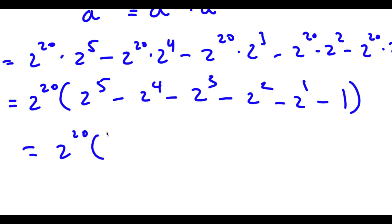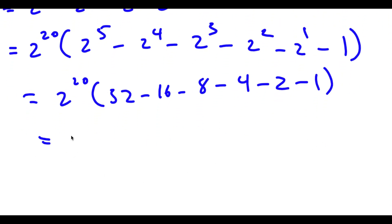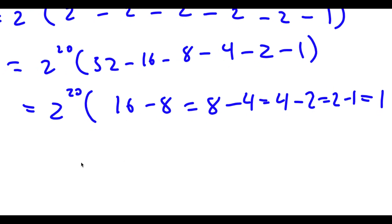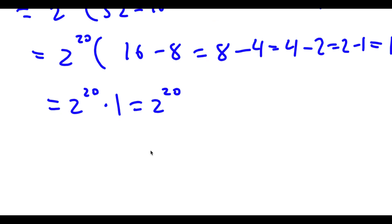Now, 2 to the power of 5 is 32, 2 to the power of 4 is 16, 2 to the power of 3 is 8, 2 to the power of 2 is 4, 2 to the power of 1 is 2, and I have 1 at the end. So 32 minus 16 is 16, 16 minus 8 is 8, 8 minus 4 is 4, 4 minus 2 is 2, and 2 minus 1 is 1. So I have 2 to the power of 20 times 1, which is equal to 2 to the power of 20. So 2 to the power of 20 is our answer.